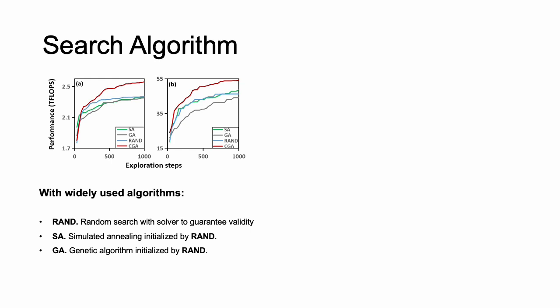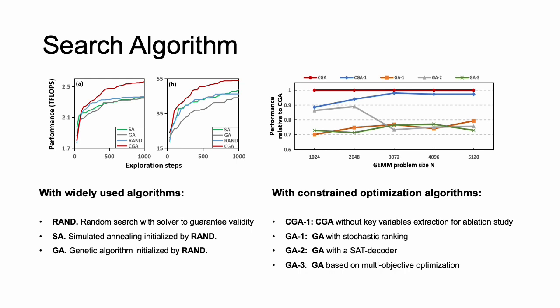To verify the effectiveness of our proposed search algorithm, we compared CGA with commonly used optimization approaches and other constraint optimization algorithms. We first compare with simulated annealing and genetic algorithm that are commonly used in AutoTVM and Answer. The results show that CGA converges faster and better. We then compare with other constraint optimization approaches under different problem sizes. The results show that CGA outperforms other approaches, since it guarantees the validity of solutions and retains the good genes.